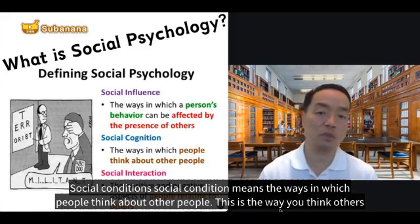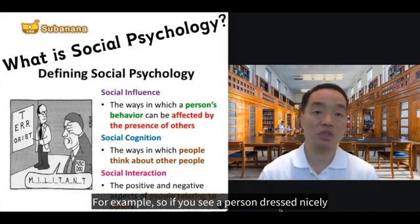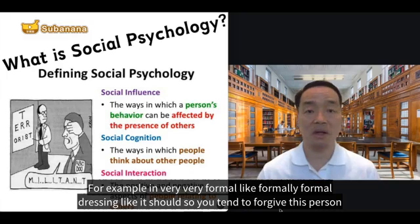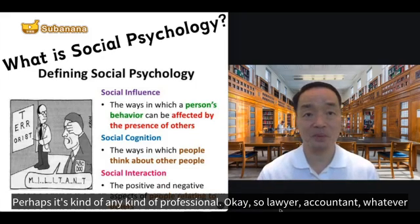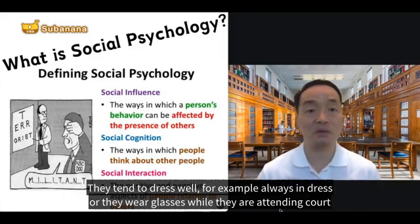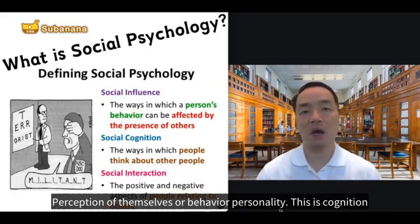Social cognition means the ways in which people think about other people — the way you think about others. For example, if you see a person dressed nicely in very formal attire like a suit, you tend to believe this person is perhaps a professional — like a lawyer or accountant. That's why many suspects or criminals tend to dress well and wear glasses while attending court, because they believe the way they dress will affect other people's perception of their personality.